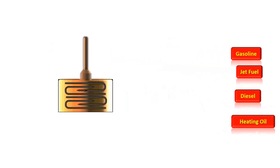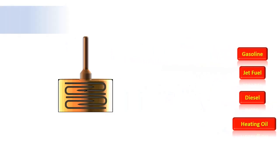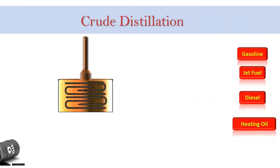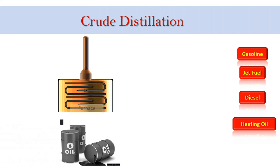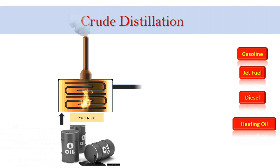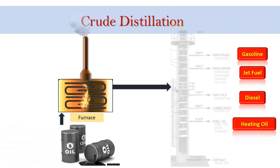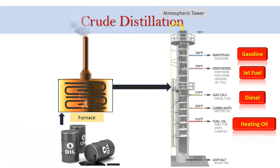The crude distillation unit is the first unit in the refining process. In this unit, the raw crude is distilled into several intermediate products, including naphtha, kerosene, diesel, and gas oil.